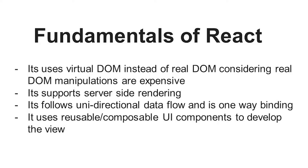React.js has unidirectional data binding, meaning data flows in one direction — from the UI side. There are two kinds of binding in front-end engineering: one-way and two-way binding. Two-way binding is used by technologies like AngularJS and Angular, where you can bind data from both controller and model. In React.js, data flows unidirectionally from the view layer only.